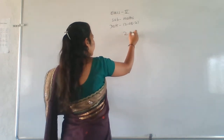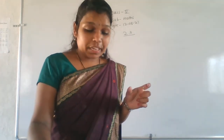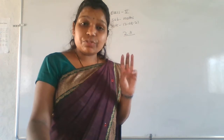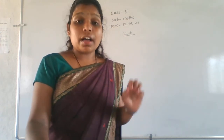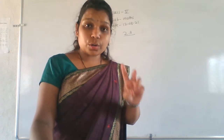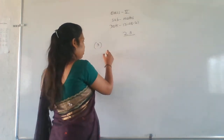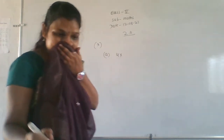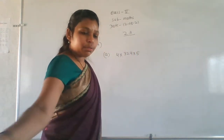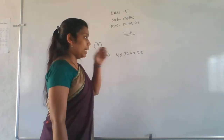Exercise number 2.3, third main: using a suitable grouping, find the product. They have given three numbers and you have to find the product of those three numbers. We have to make a group of two numbers and then solve the multiplication problem. The first one is 4 into 329 into 25.